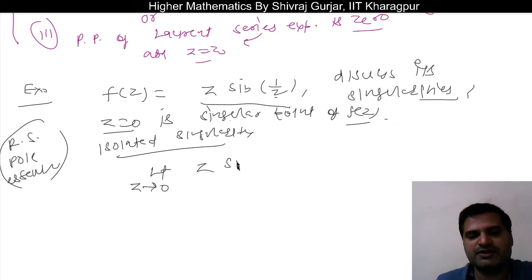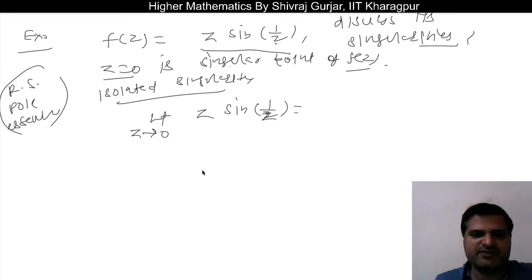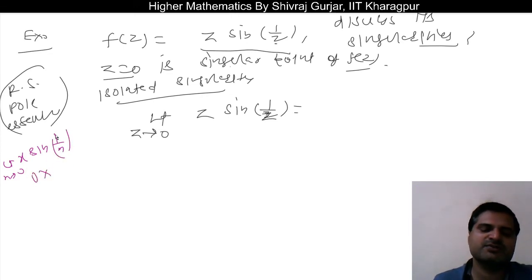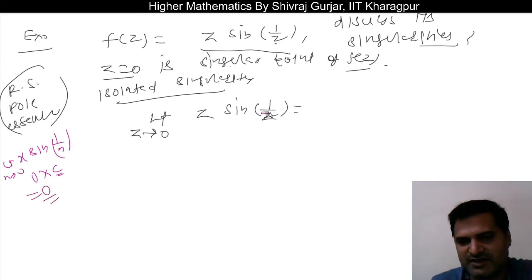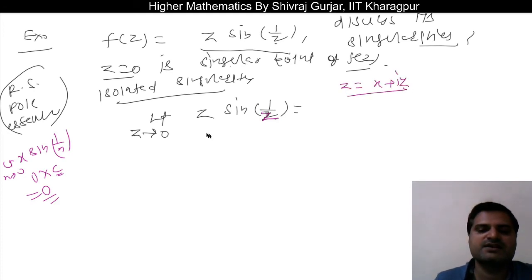Now we check whether z = 0 is a removable singularity, pole, or essential singularity. For removable singularity, we check if the limit as z tends to 0 of z·sin(1/z) exists. In real analysis we know that sin(1/x) oscillates as x tends to 0, but here z is a complex number, so we need to be more careful.